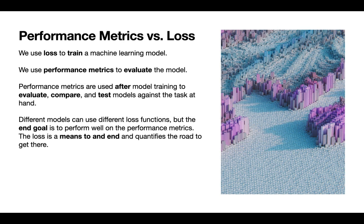Just a final note on the difference between a performance metric and loss is that we use the loss to train a machine learning model. The performance metrics are used to evaluate the model. The performance metrics are used after model training to evaluate, compare, and test models against the task at hand. Different models can use different loss functions, but the end goal is to perform well on these performance metrics.